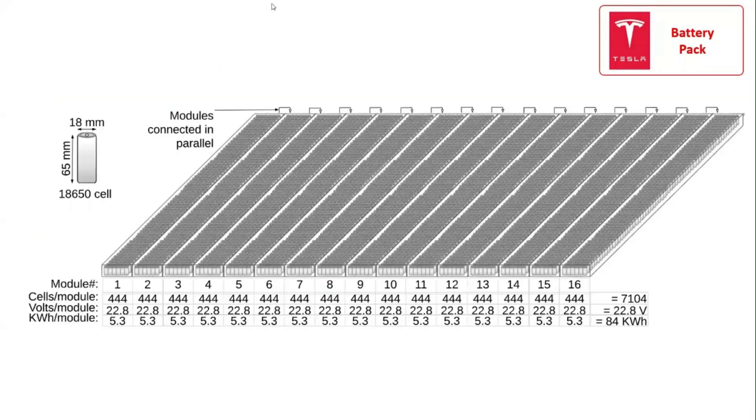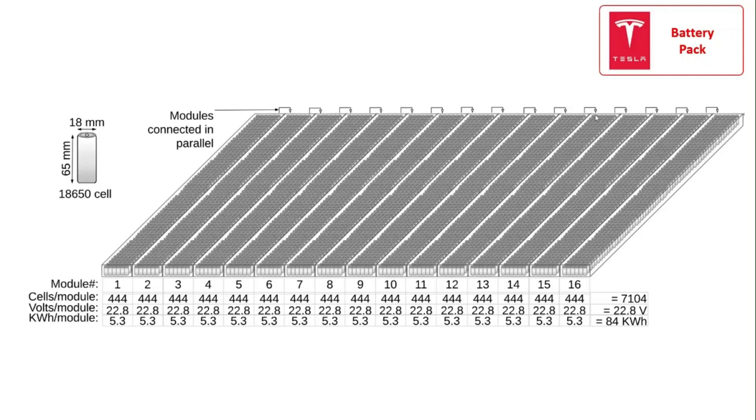In a Tesla Model S battery pack, 16 battery modules are assembled inside a battery tray. Each of these 16 modules is connected in parallel to the central bus bar in the battery pack through the M8 bolt terminals on the battery module. The battery pack's central bus bar collects current from all the modules and takes it to a contactor which feeds it to the electric drive.